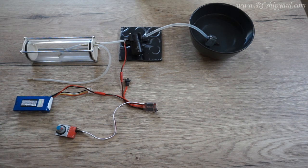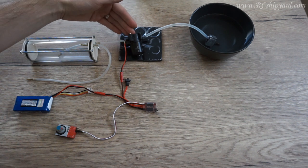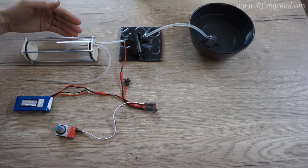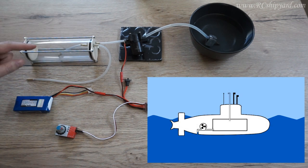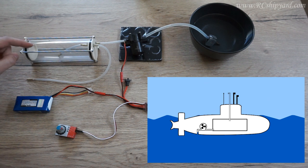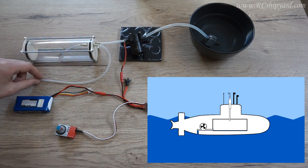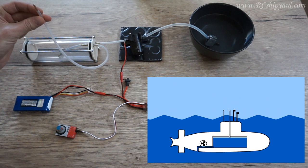Alright, so if you want to submerge your model you simply turn on the pump. The pump will fill the tank with water and the air, instead of being trapped and compressed here, will escape through the tube and through the snorkel.